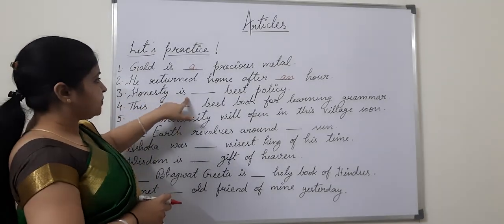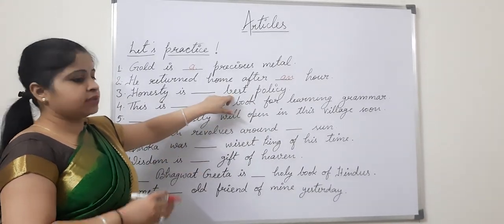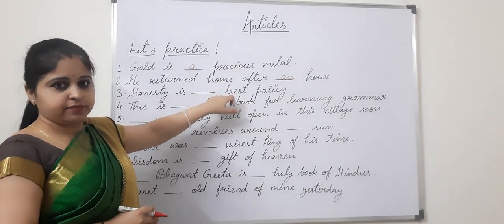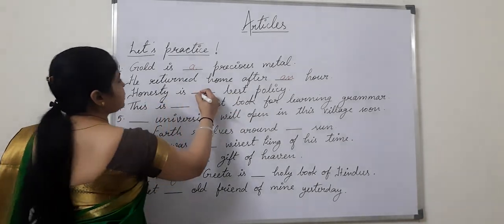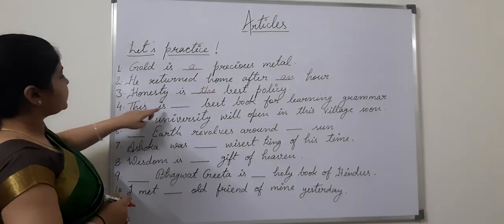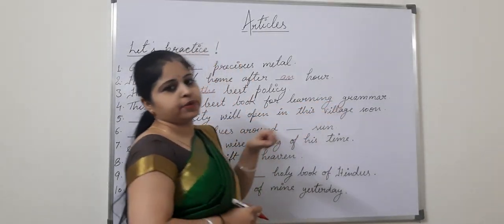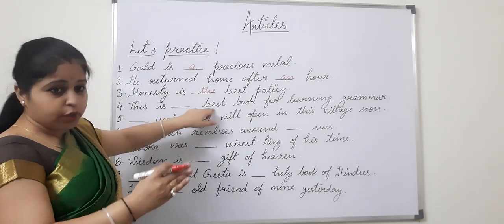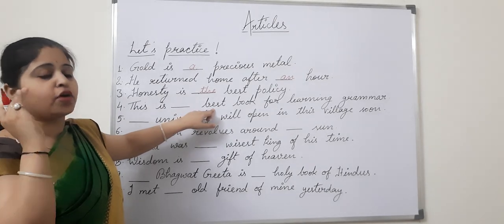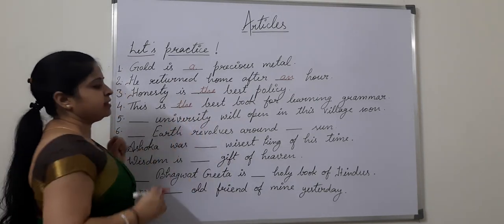'Honesty is the best policy.' Best — good, better, best — is the superlative degree of adjective, and we know we put 'the' with superlatives. Next: 'This is the best book for learning grammar.' Again, 'best' is a superlative, and superlatives always carry 'the'.